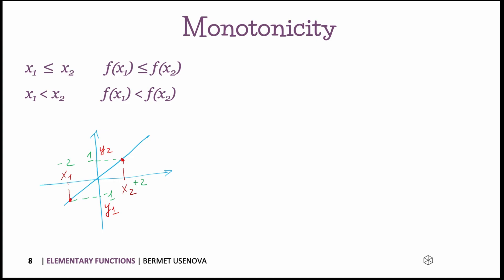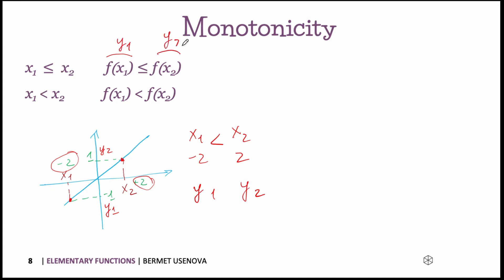We can see that x1 equals minus 2 is smaller than x2, and correspondingly y1 equals minus 1 and y2 equals 1. Since minus 1 is smaller than 1, the inequality has the same sign, so this function is called monotonically increasing on this interval. It is strictly increasing if we don't include the equal sign — then it is called strictly monotonically increasing.